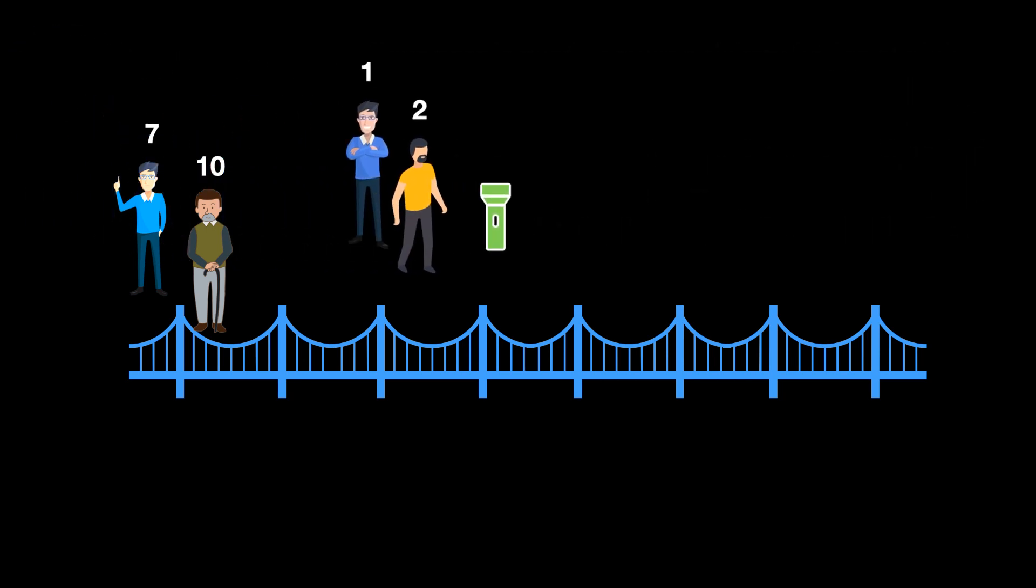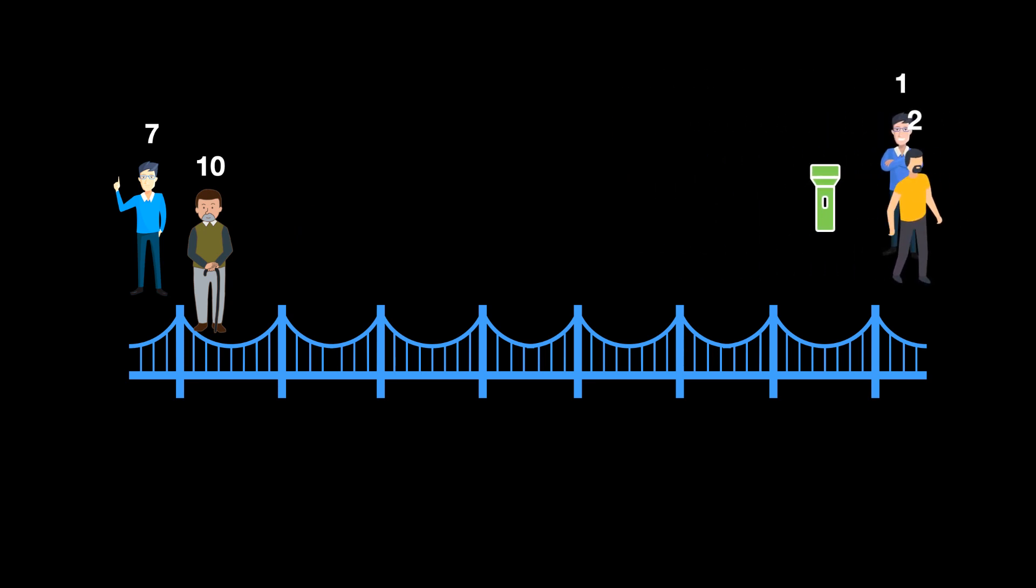So in first step 1 and 2 crosses the bridge and 2 returns with the torch. Here time taken is 2 + 2 = 4.